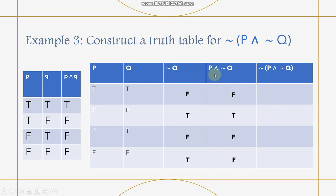Now we have the values of P∧¬Q. Next, we apply the negation to get ¬(P∧¬Q). The negation of F is true, negation of T is false, negation of F is true, and negation of F is true. I hope you are following along since we are moving on to the application.